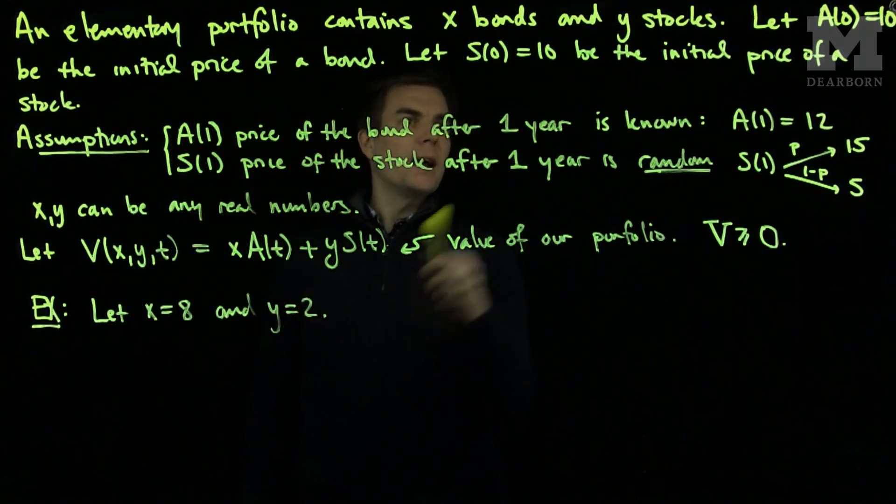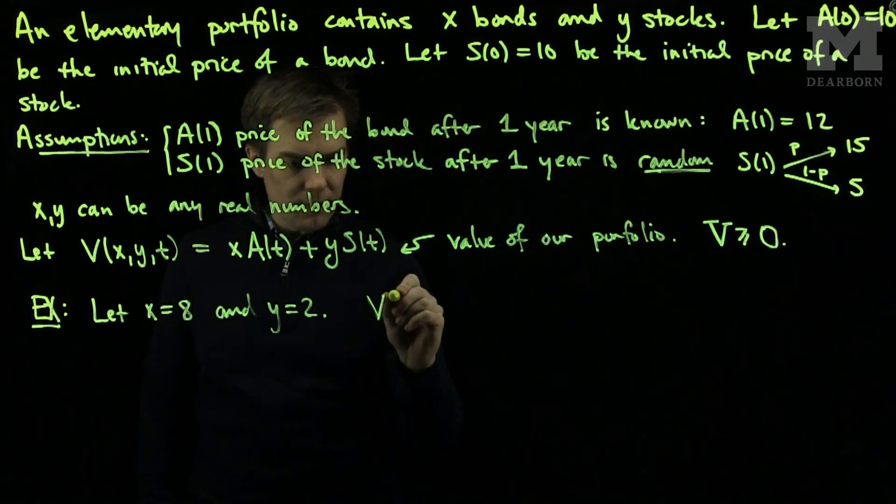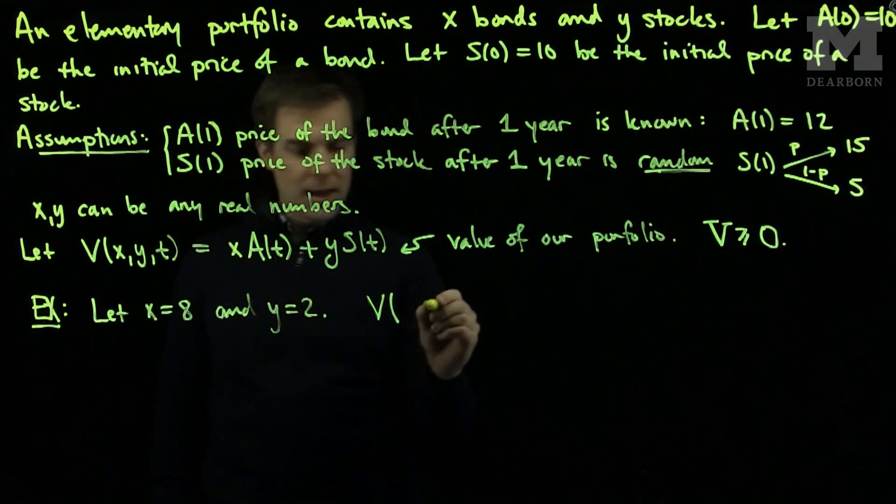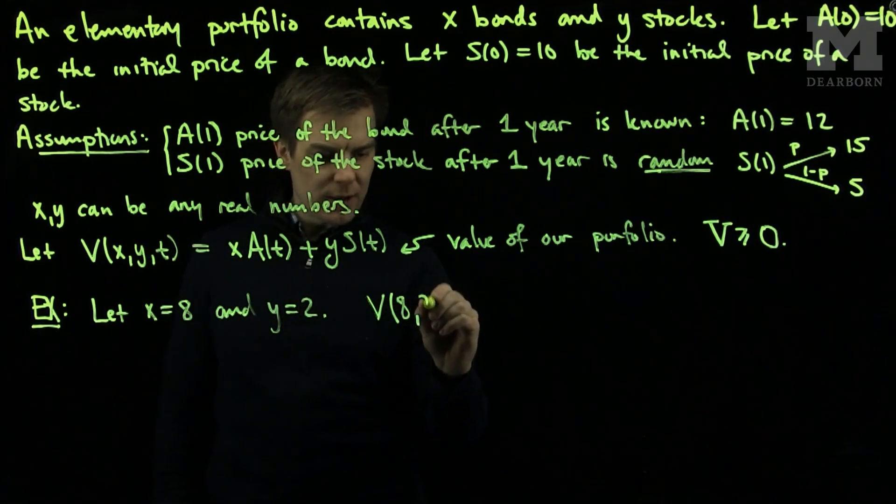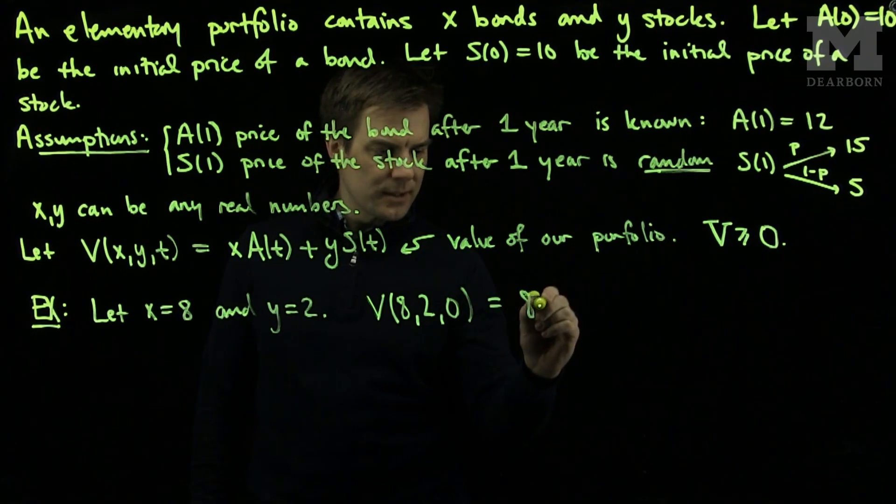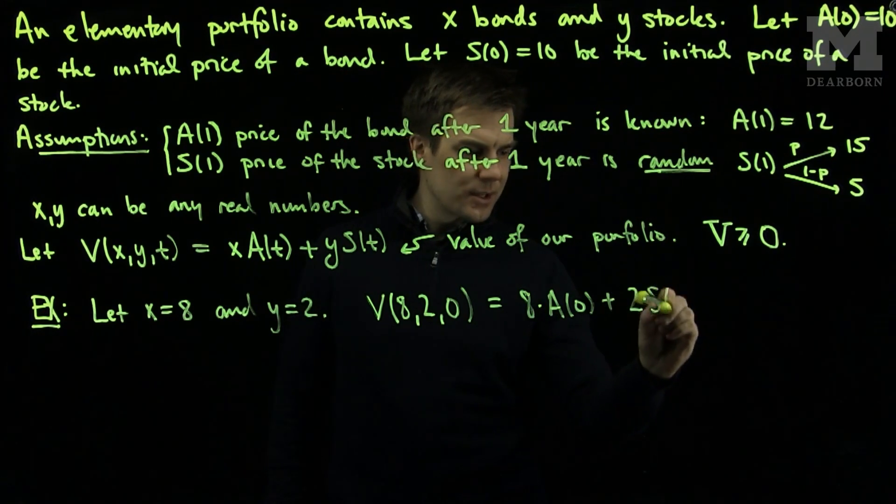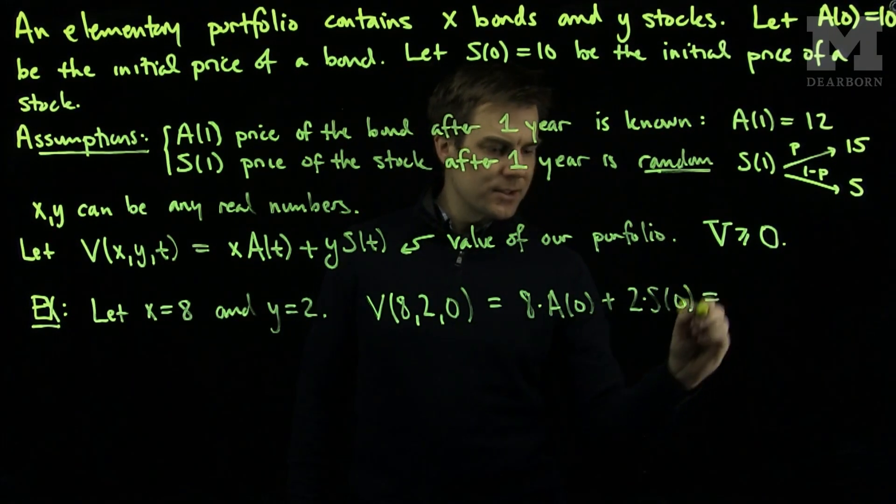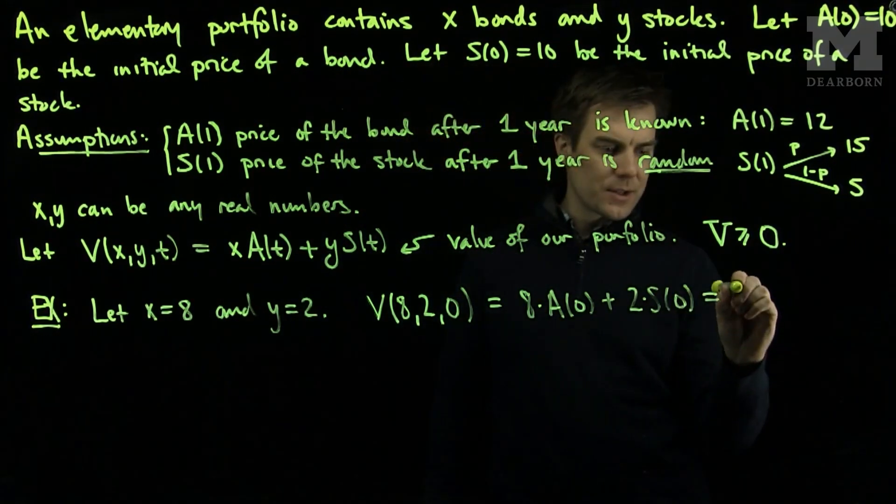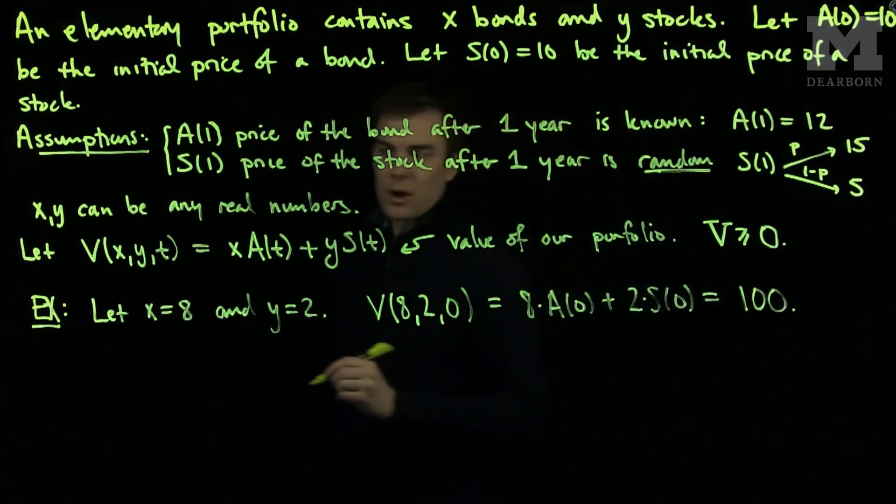So that means I'll have 8 bonds and 2 stocks. So initially, V(8,2,0) will be 8 times A(0) plus 2 times S(0). Since both A(0) and S(0) are 10, we see that this is 100. So the initial value of my portfolio is 100.